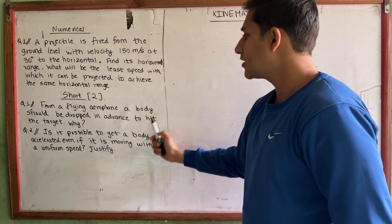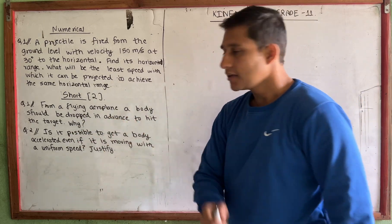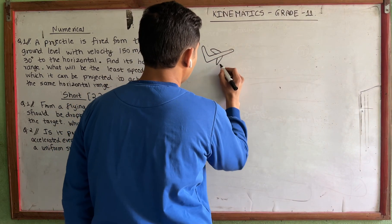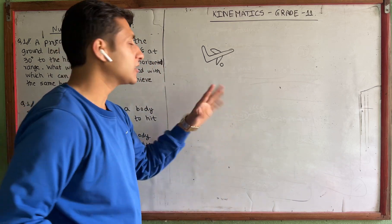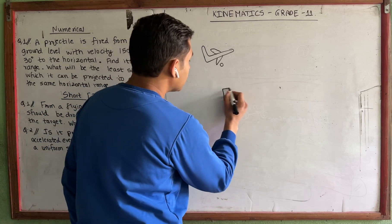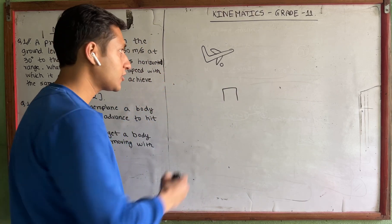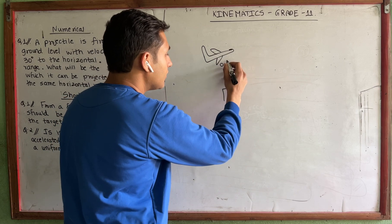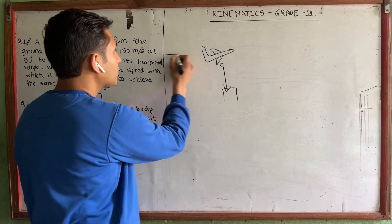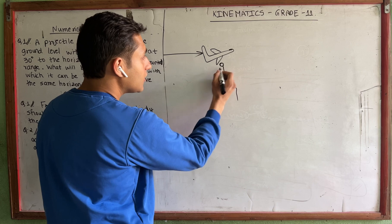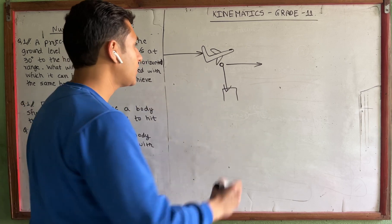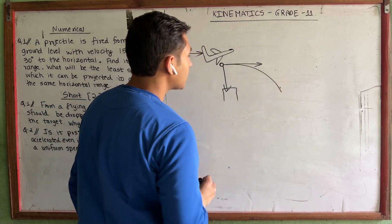From a flying airplane, a body should be dropped in advance to hit the target. If you see the bomb is dropped from the plane, it is in motion. If you see the plane in motion, it has a horizontal velocity. If you see it as a projectile, it follows a curved surface path.